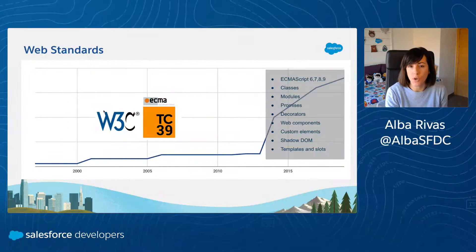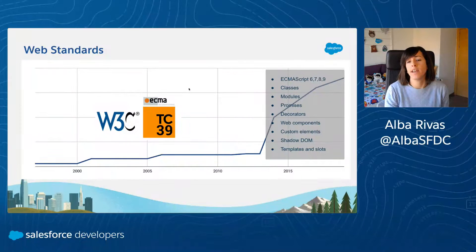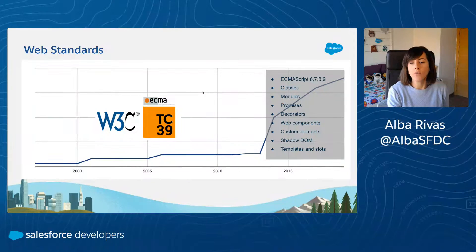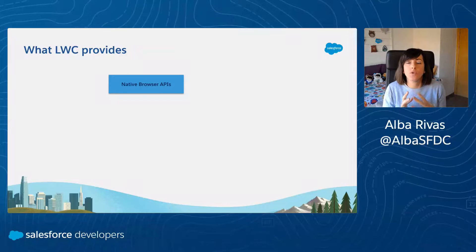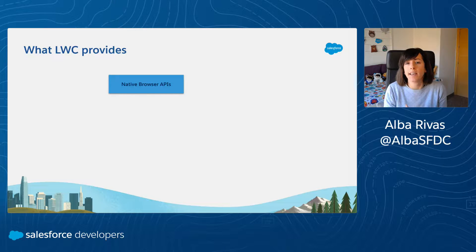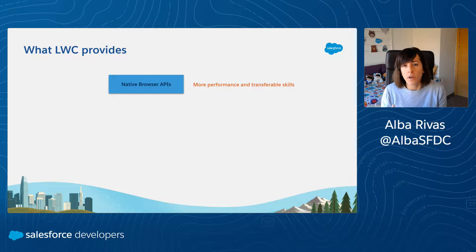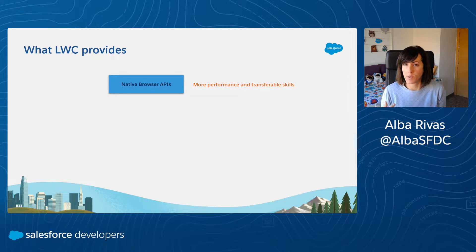These are the World Wide Web Consortium and the ECMAScript Technical Committee. By the way, Salesforce is part of this organization. Browser vendors have also been working hard to adopt all those new standards. So now we have a landscape in which we are able to take advantage of many more native browser APIs than those we were able to use in 2014. As Lightning Web Components uses native browser APIs, they're going to be much more performant. And if you learn Lightning Web Components, you are really learning standards and native browser APIs, which means your skills are transferable to any other JavaScript-based technology.